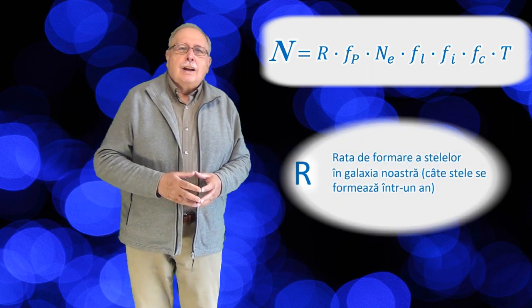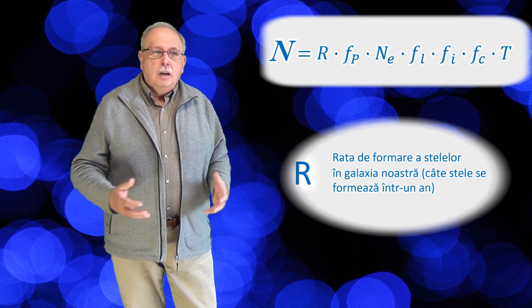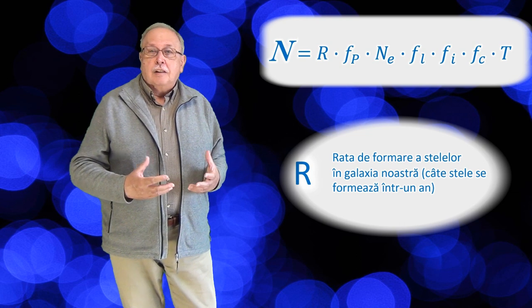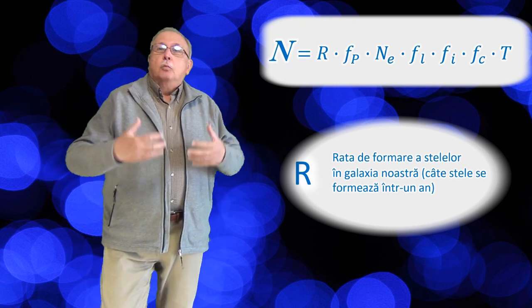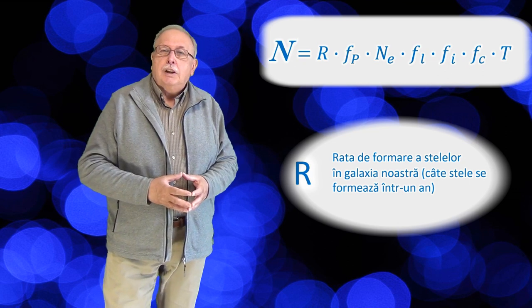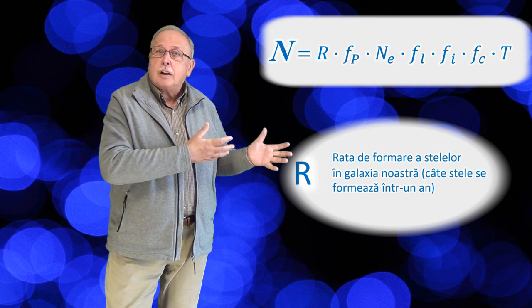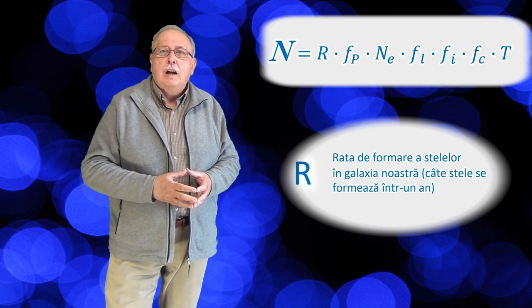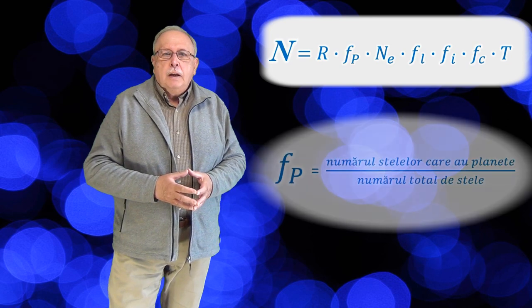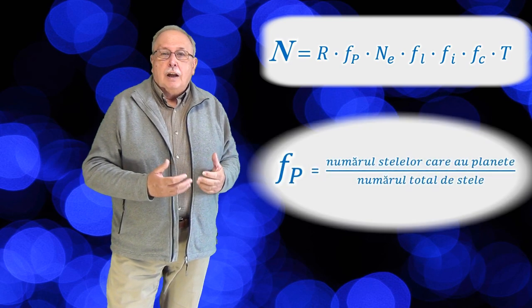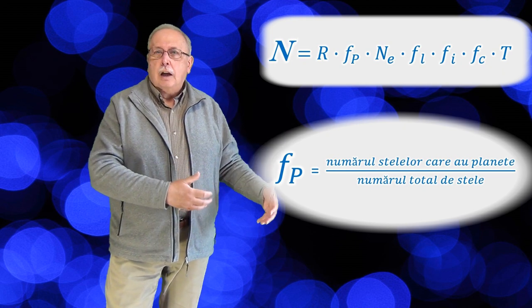R mare este rata medie de formare a stelelor în galaxia noastră. Câte stele se formează în medie pe an. Sigur că procesul de formare al unei stele este un proces de foarte lungă durată, dar dacă luăm numărul de stele care apar în galaxie în, să zicem, un milion de ani și împărțim acel număr la un milion, găsim această valoare pentru R pe care o numim rata de formare a stelelor. Câte stele se formează pe an în medie în galaxia noastră. FP este fracția care ne arată câte stele au planete, adică este raportul dintre numărul stelelor care au planete din galaxie și numărul total al stelelor.